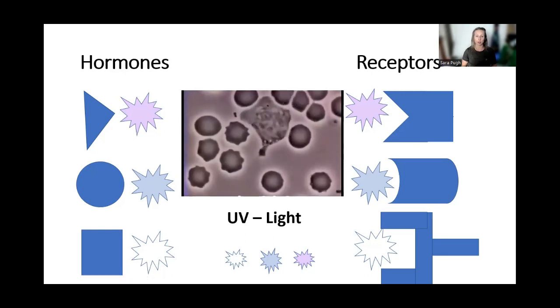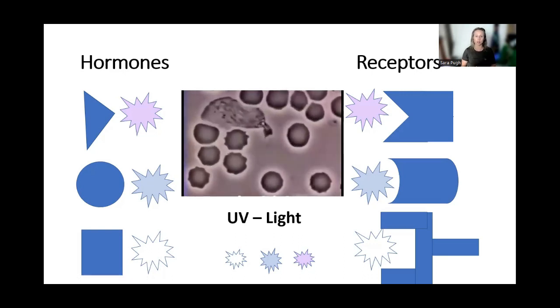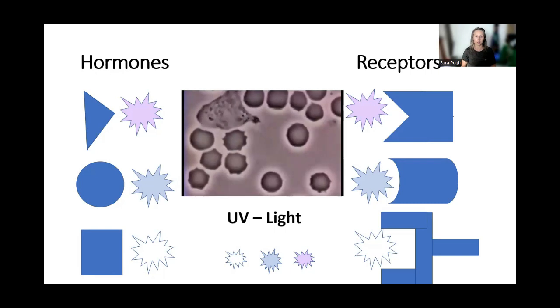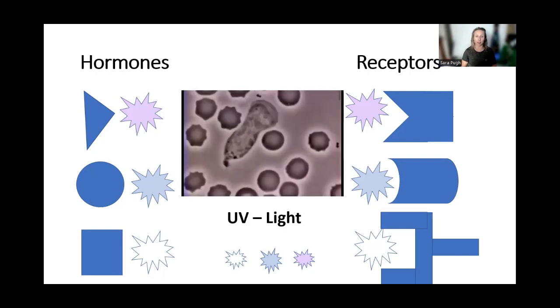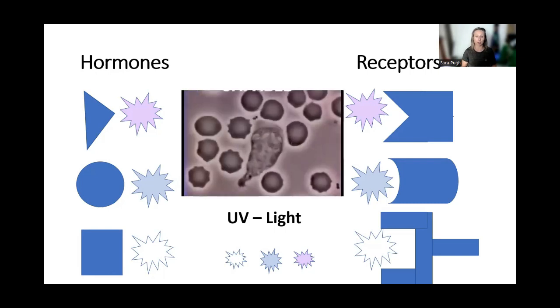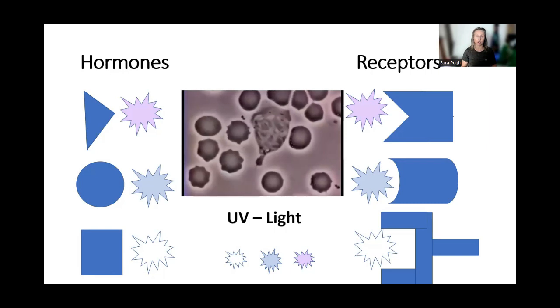This video is showing an immune cell chasing a bacteria around the body. An immune cell doesn't have any eyes and it can't smell, so how does it know where this bacteria is?